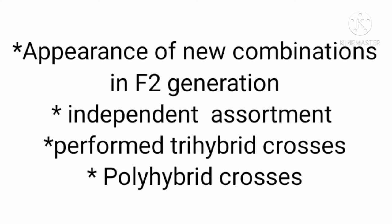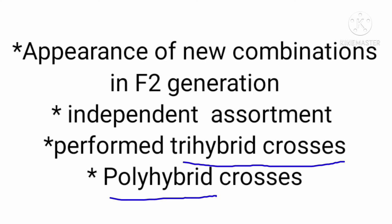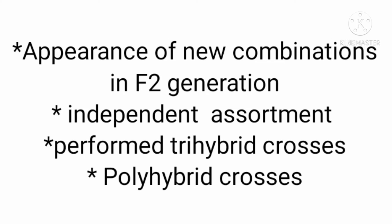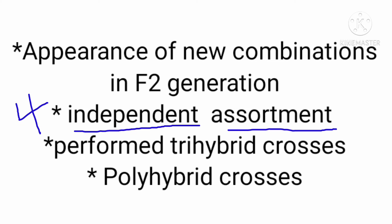From the appearance of new combinations in F2 and the uniform pattern of the dihybrid ratio, Mendel established the principle of independent assortment. He also performed trihybrid crosses and concluded that when a dihybrid or polyhybrid forms gametes, each gamete receives only one allele from each pair due to segregation. The assortment of alleles of different pairs is totally independent — each allele is free to enter any gamete with any allele from the remaining pairs. Thus a dihybrid forms four types of gametes.